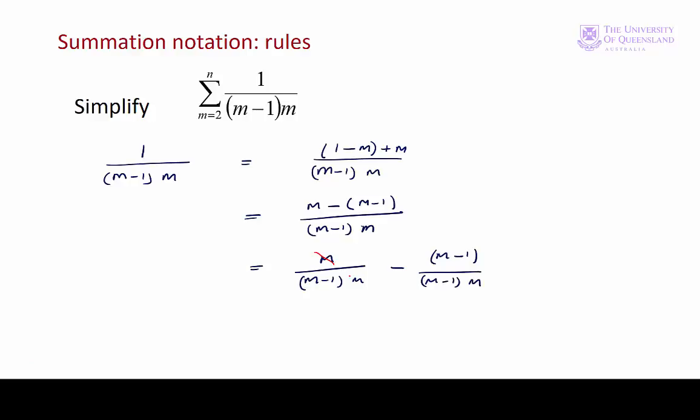We can see our m's cancel out there and the (m minus 1)'s cancel out there. So now we're left with 1 over (m minus 1) minus 1 over m.